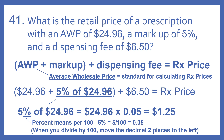Remember, percent means per 100. So 5% of $24.96: we take $24.96 times 0.05 — that's 5% — which equals $1.25. Then we're going to add the $6.50 dispensing fee to get our prescription price.